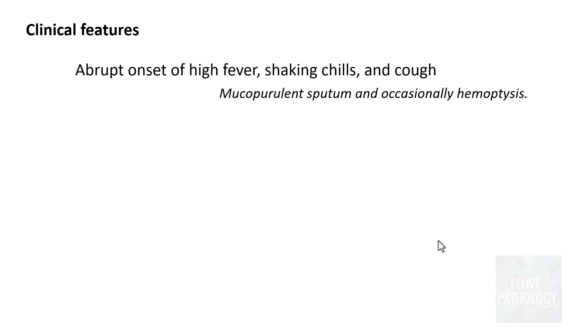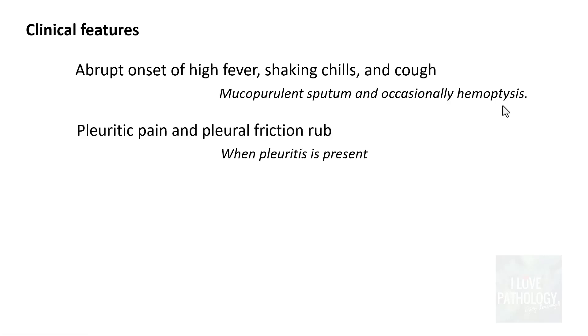Once we understand the pathogenesis and morphological features of lobar and bronchopneumonia, it is easy to correlate them with clinical features. These patients present with abrupt onset of high-grade fever and shaking chills — because neutrophils and macrophages in the alveoli release interleukin-1, causing fever and chills — and cough due to the presence of secretions. Sputum is usually mucopurulent, and occasionally hemoptysis can occur. If the pleura is involved in the form of pleuritis, there will be pleuritic pain and a pleural friction rub.